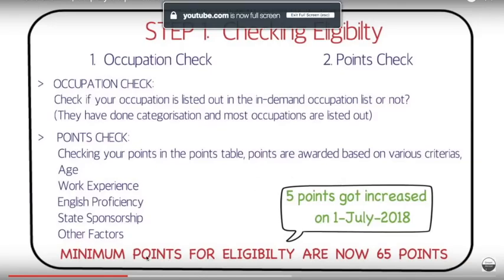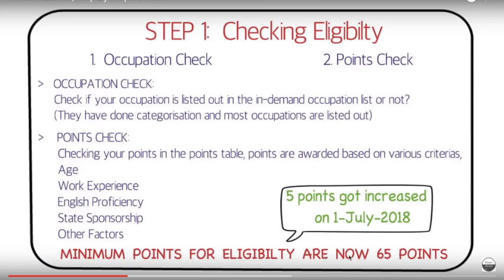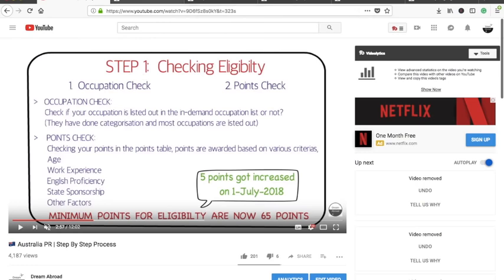The first and foremost thing you should check is that the minimum points for eligibility are now 65 — the points got increased on the first of July. There are two steps to checking your eligibility: the first is the occupation check and the second is the points check. You should check if your occupation is listed in the occupations list, and also check how many points you actually score. If you score more than 65, you'll be eligible.